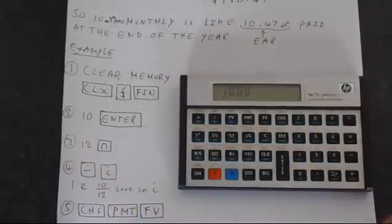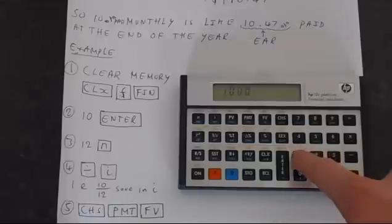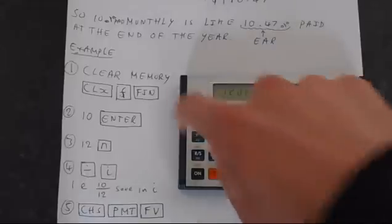Then we'll put the number 12 into our period, so that's our N. We'll do 12, then store that in N.